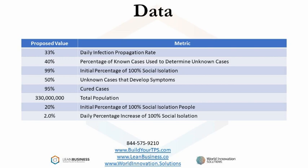Another metric has to do with an estimation of how many people are infected but don't know it. This is called the percentage of known cases used to determine unknown cases. The estimate here is that out of 10 cases, four of those cases do not know that they are infected and are therefore unmeasured. You can see that this data can impact infection rates, the effect of other metrics, the calculation of cured patients, and the percentage of people that are practicing extreme social distancing.